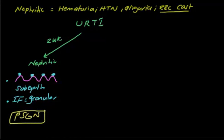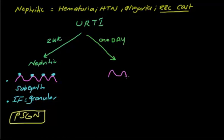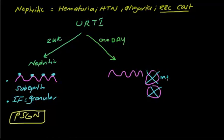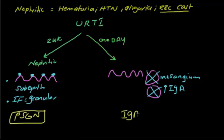Now the same patient has an upper respiratory tract infection, but this time the nephritic presentation appears within one day — not two weeks, but within the same period of the upper respiratory infection. Here, the epithelial cells are not the problem. The affected structure surrounding the epithelial cells is the mesangium. Mesangial destruction leads to increased IgA, and we call this disease IgA nephropathy.